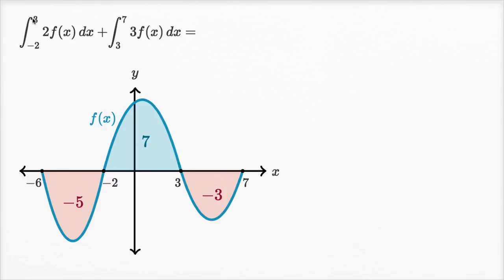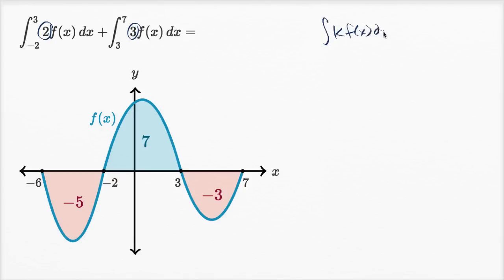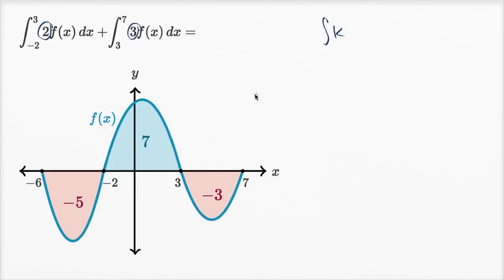The first thing my brain wants to do is take these constants out of the integral. Because then, once they're out and I'm just taking the straight up definite integrals of f of x, I can relate that to the areas on the graph. I know I can do that — this is a very common integration property that applies to definite and indefinite integrals: the integral of k·f(x) dx equals k times the integral of f(x) dx, taking the scalar outside of the integral.